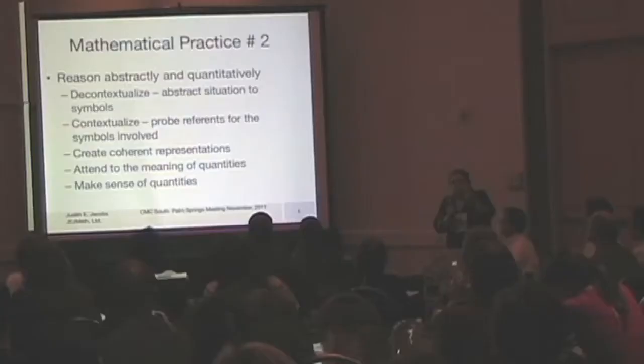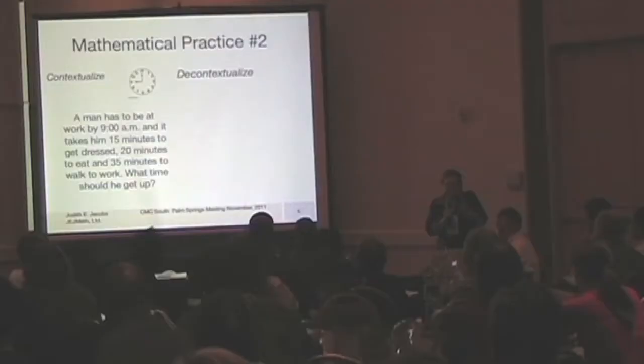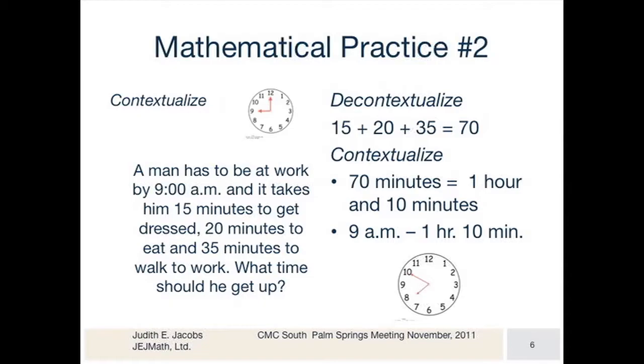Reasoning abstractly and quantitatively — this decontextualized and contextualized idea is extremely important to work on with our students. For example, contextualized, it has to do with the clock and time. Decontextualized, you take the numbers and add them up. But 70 has to be regrouped with 60 minutes for hours, so we have to go back and contextualize. That's what that's about.